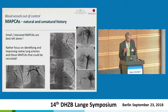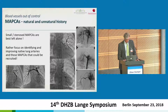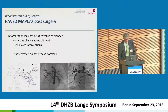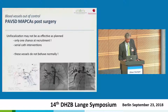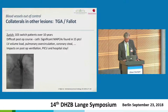Small and stenosed MAPCAs are best left alone. We should focus on identifying native pulmonary arteries and generating blood flow to these — by stenting of the RVOT or central shunts. Unifocalization may not be as effective as planned, and there is only one chance at recruitment. We require serial cath interventions, as these vessels truly behave abnormally.